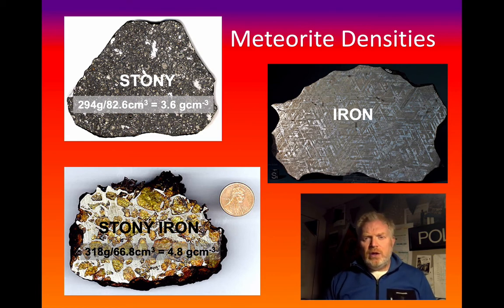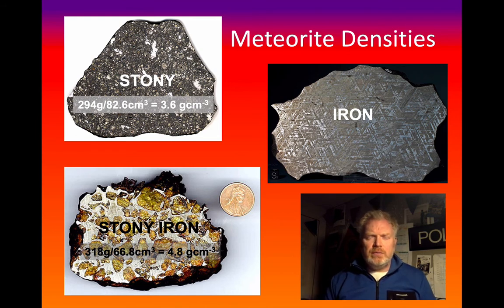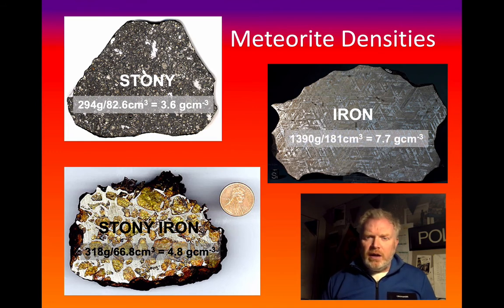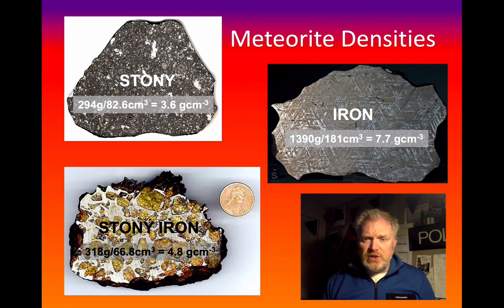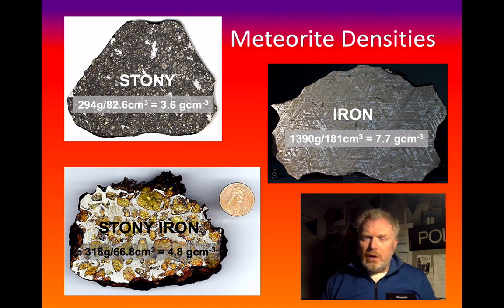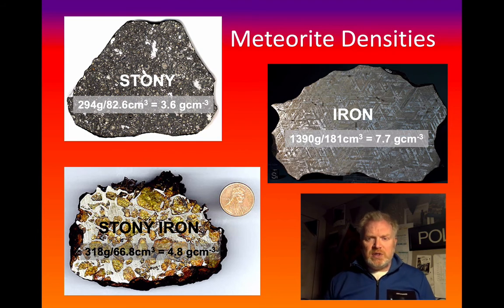Finally, the iron meteorite — these have beautiful crystalline patterns called Widmanstätten patterns, which show they cooled very slowly. Here we have a mass of 1390 grams — we need to convert it from kilograms into grams — divided by 181 cubic centimetres, which gives us a higher density of 7.7 grams per cubic centimetre.